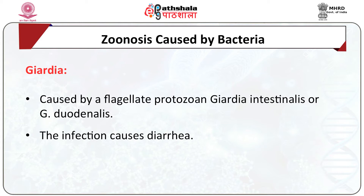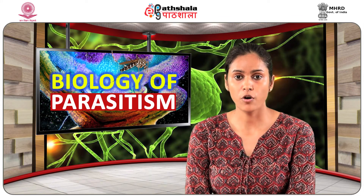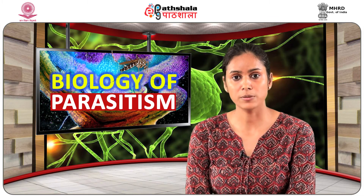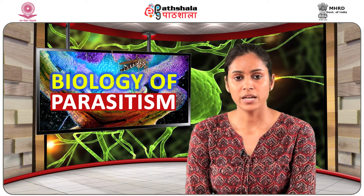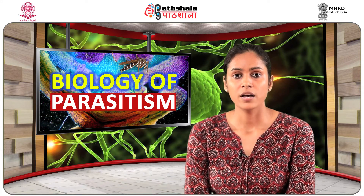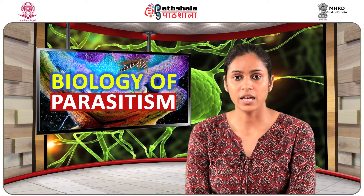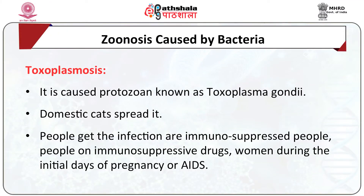Giardia disease is caused by a flagellate protozoan called Giardia intestinalis or Giardia duodenalis. This agent resides in the intestine of household and wild animals. The infection causes diarrhea. Intake of contaminated water is responsible for infection in both human beings and animals. Giardia species can survive at low temperatures and in chlorinated environments, and can also be transmitted through direct contact with infected animals like cats and dogs.